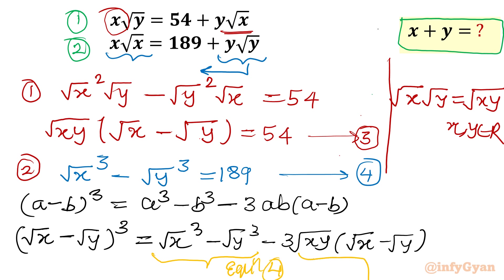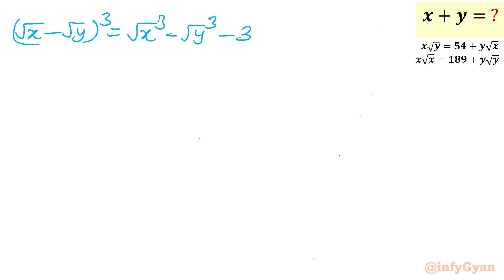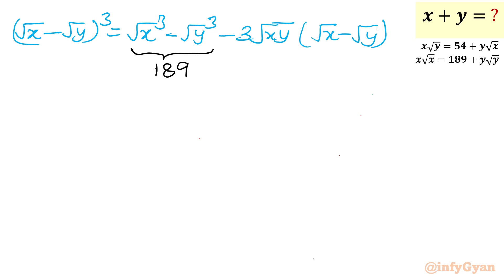So we have (√x − √y)³ = (√x)³ − (√y)³ − 3·√(xy)·(√x − √y). The term (√x)³ − (√y)³ is equation 4, which equals 189, and √(xy)·(√x − √y) is equation 3, which equals 54. Substituting, we get (√x − √y)³ = 189 − 3 × 54 = 189 − 162 = 27.